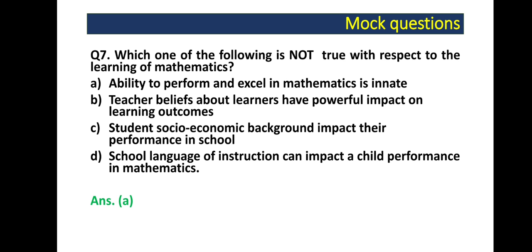Question 7: Which one of the following is not true with respect to learning of mathematics? The ability to perform and excel in mathematics is innate. Teacher beliefs about learner have powerful impact on learning outcomes. Student social economic background impacts their performance in school. School language of instruction can impact a child's performance in mathematics. The correct answer is option A: the ability to perform and excel in mathematics is innate.